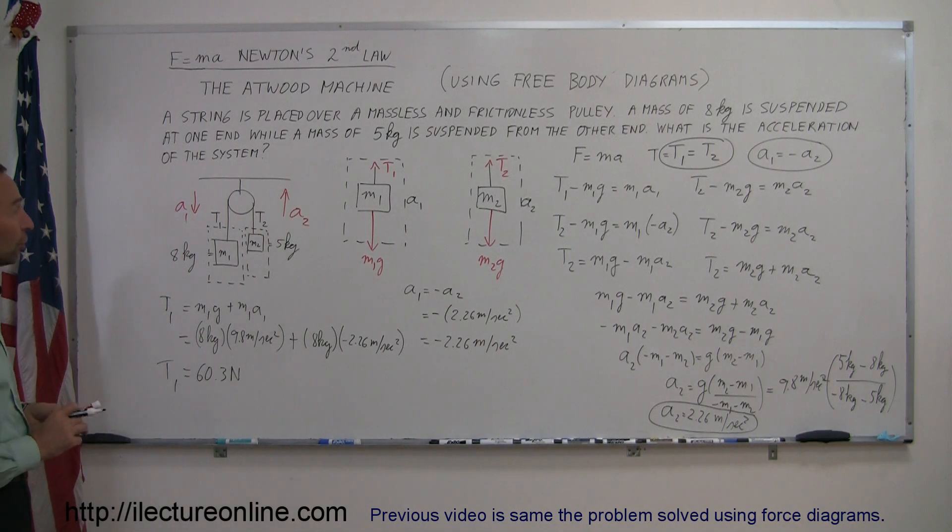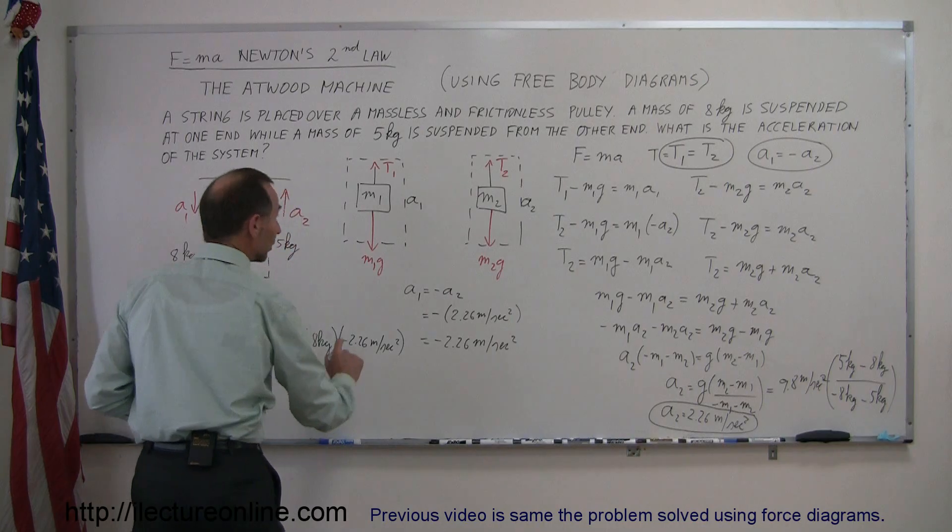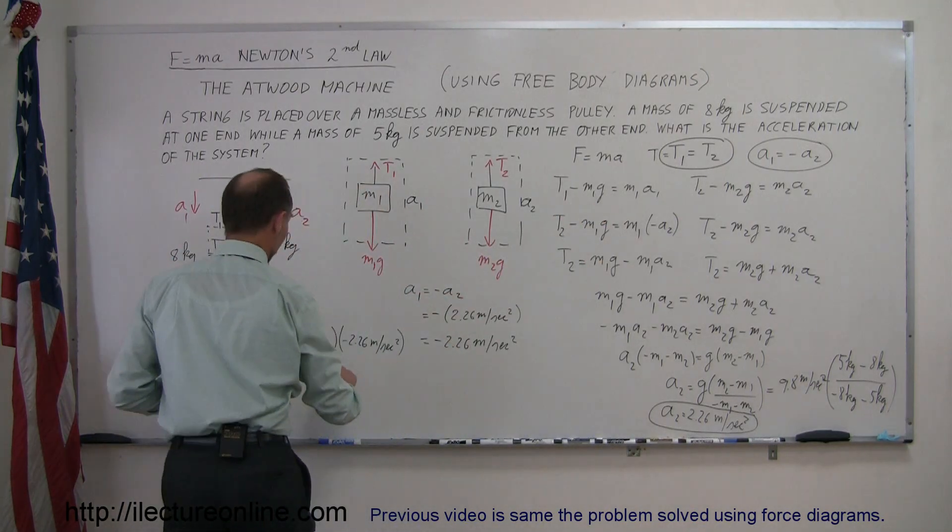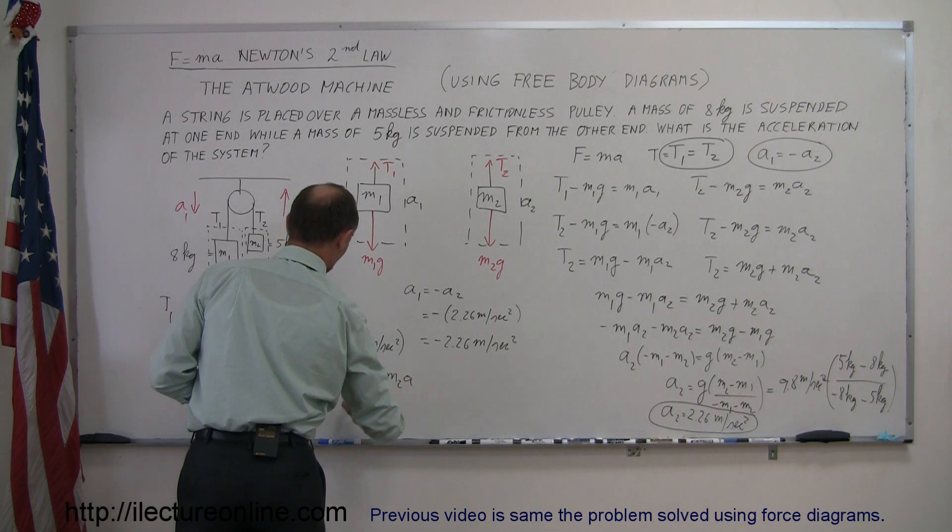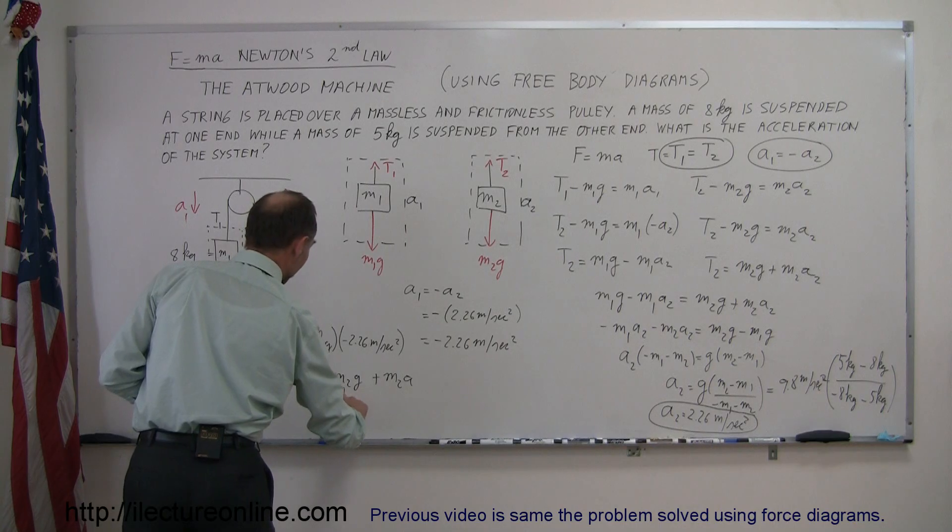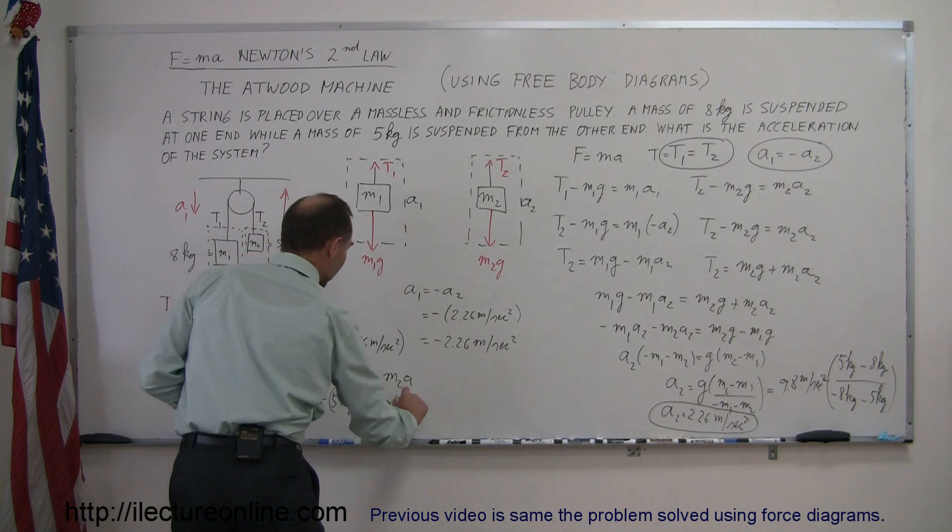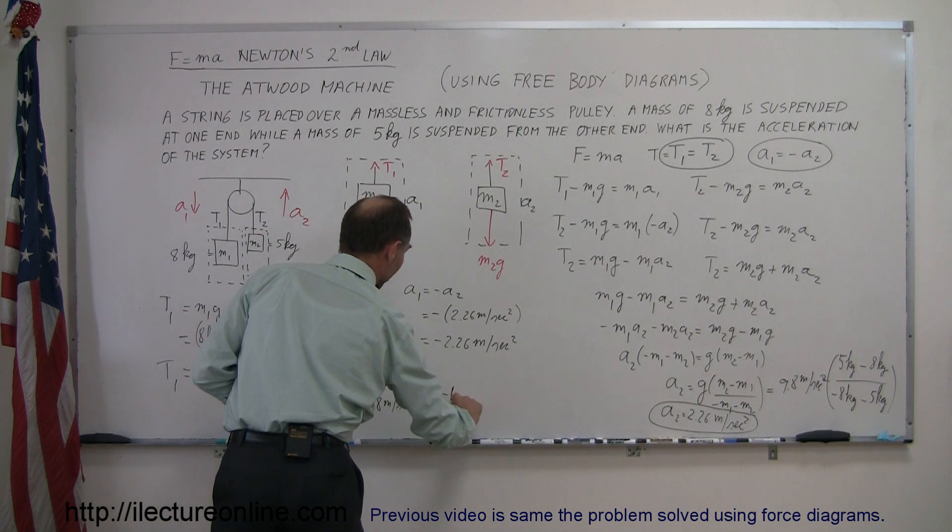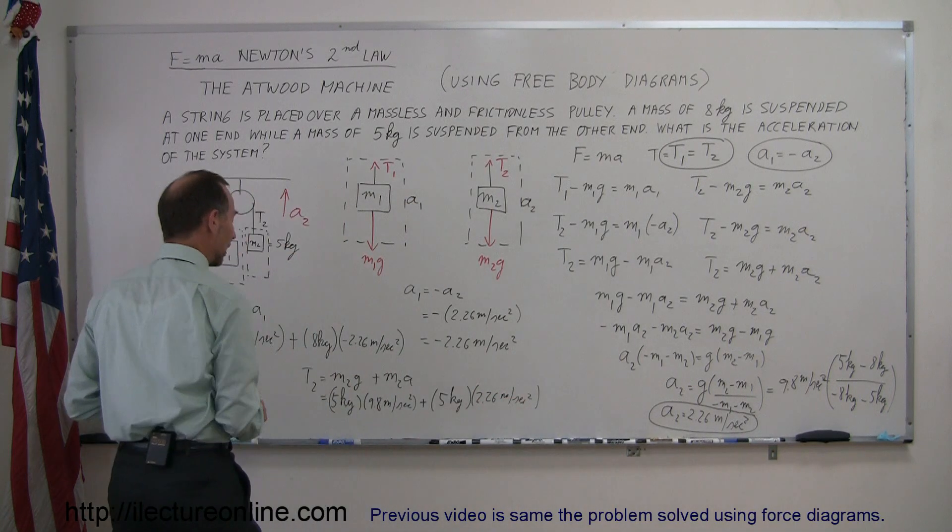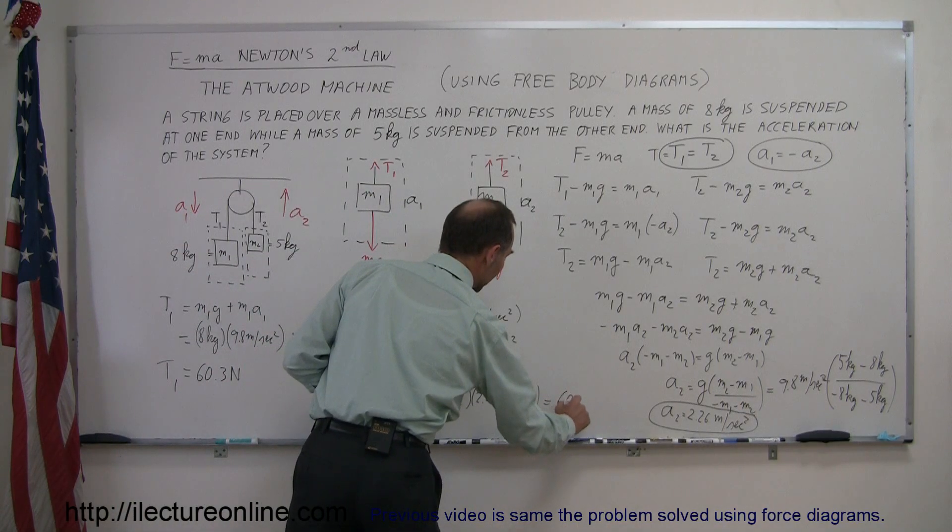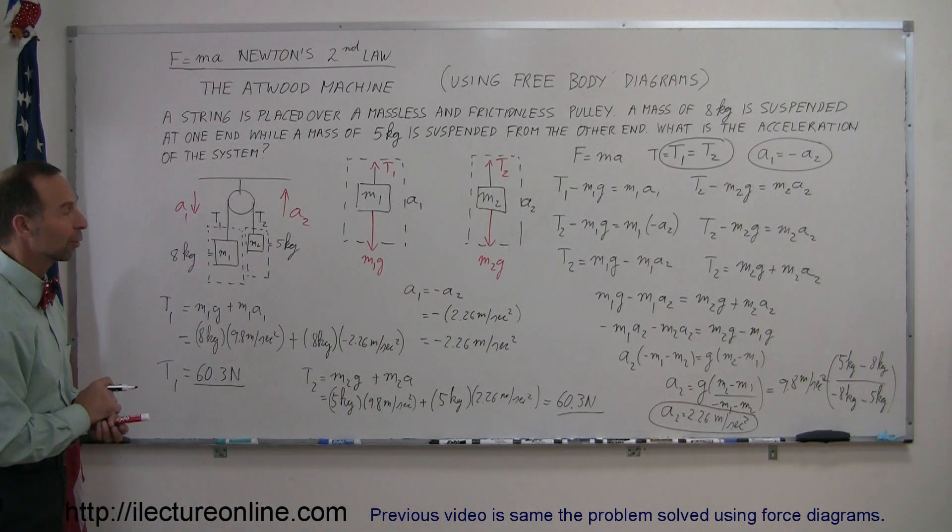You can do exactly the same for tension 2, and you will get the same answer. Tension 2 equals M2G plus M2A2. M2 is 5 kilograms times 9.8 meters per second squared, plus 5 kilograms times 2.26 meters per second squared. You will also get 60.3 newtons, again showing that the tensions are the same on both sides.